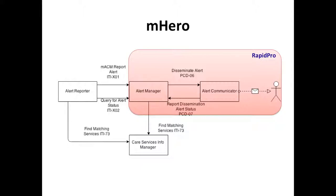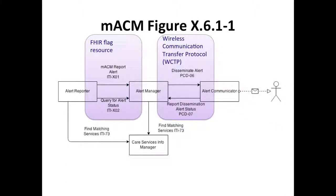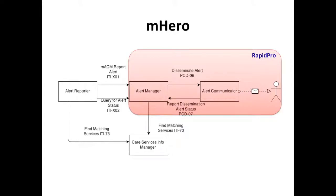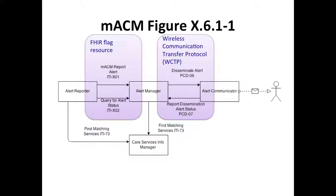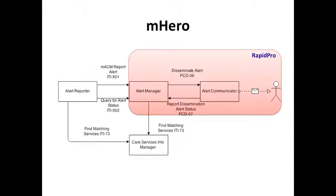mHero is one example implementation: RapidPro, with a facade interface sitting in front of it, would act as both the Alert Manager and Alert Communicator actors. Going back to the diagram, where we have the WCTP protocol, we won't actually be implementing the WCTP protocol for the RapidPro-mHero link — there isn't a particular need for that right now. This will raise questions about what it means to certify something as being OpenHIE compliant, since we're not going to be implementing the PCD-06 and PCD-07 transactions — it won't be a fully-fledged Alert Manager yet.